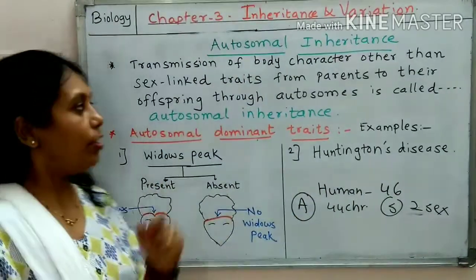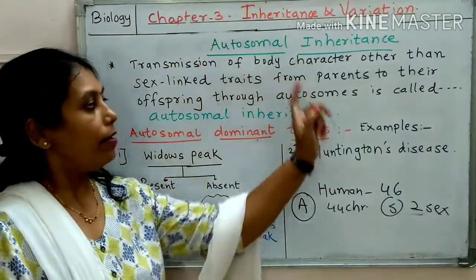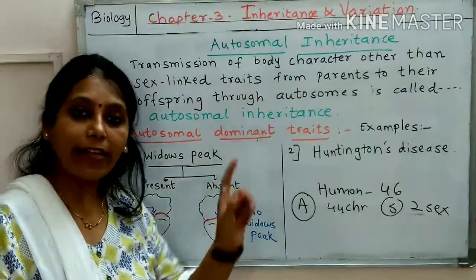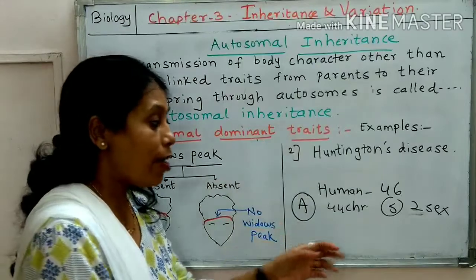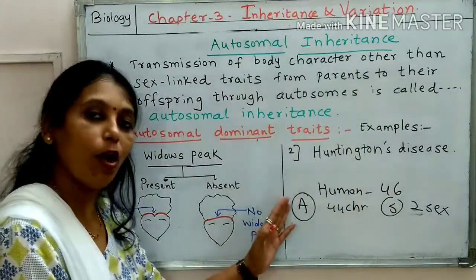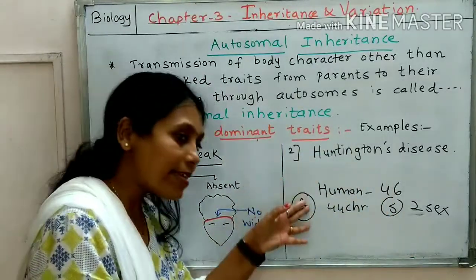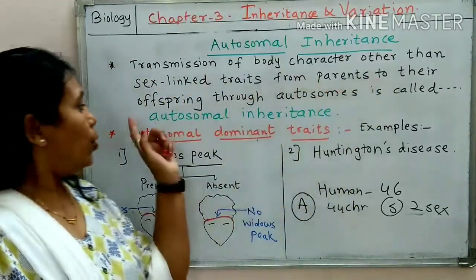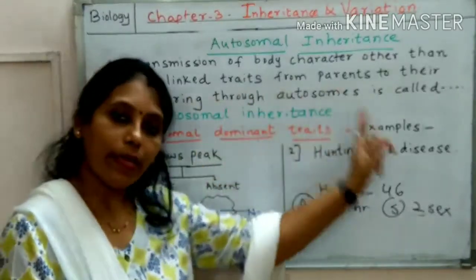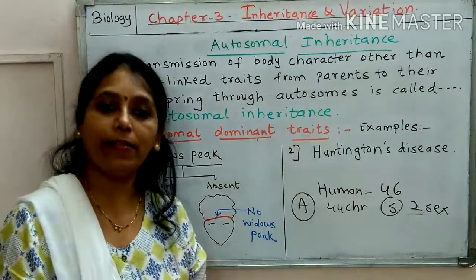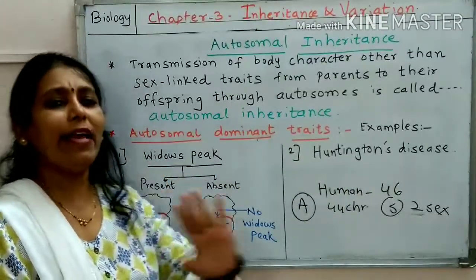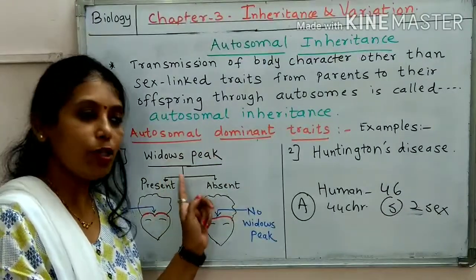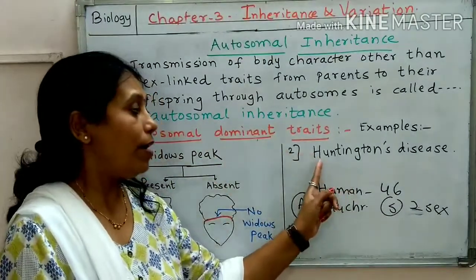Let us see the definition. Transmission of body characters — other than sex-linked traits. Traits means character. These characters are not present on the sex chromosome; they are present on the body chromosome, and these characters are transferred from parent to offspring through autosomes — this is called autosomal inheritance. The examples given are widow's peak and Huntington's disease.